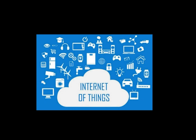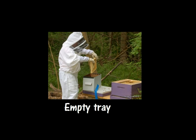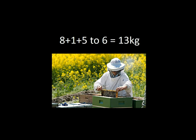Our project is based on Internet of Things, and farmers are facilitated in four ways: weight of the box, temperature, humidity, and position. The farmer inserts an empty tray and bees fill it with honey, but the farmer doesn't know exactly when it will be filled. For example, if the box weighs 8 kg, with 1 kg for bees and tray, approximately 5 to 6 kg of honey is produced. When the total reaches 13 kg, the user gets a notification that the box is filled.